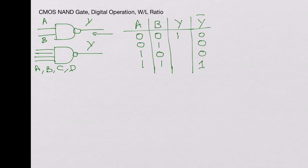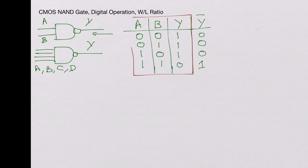In an AND gate, the output is high when both inputs are high, otherwise the output is low. For the NAND gate, the output is high when at least one of the inputs is zero. Now let's see how the NAND gate is constructed using CMOS transistors.